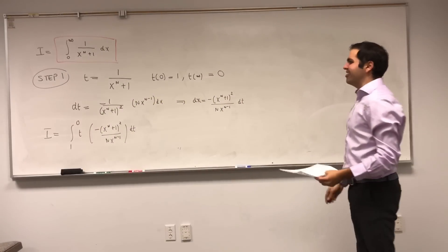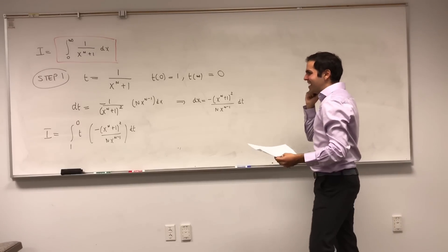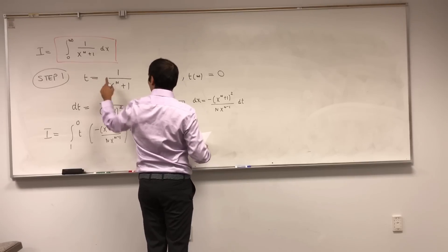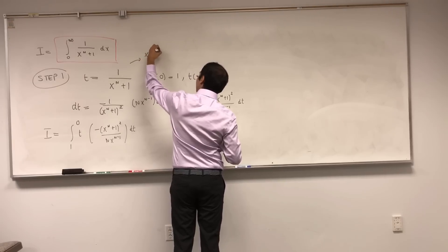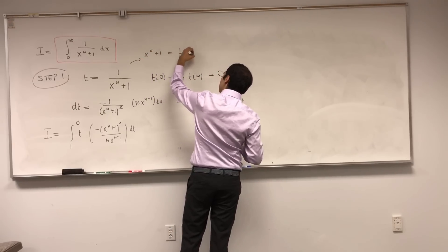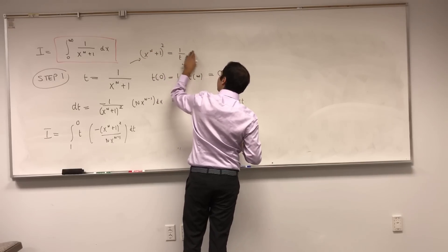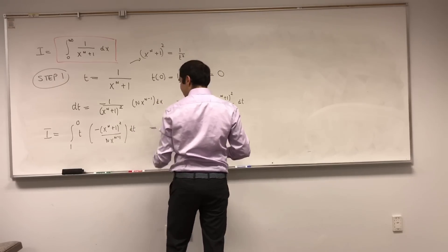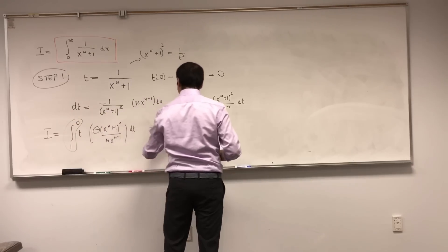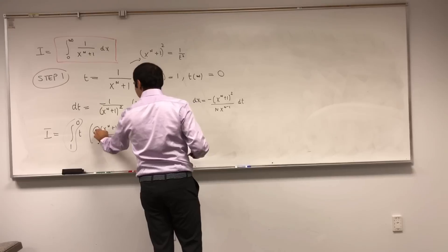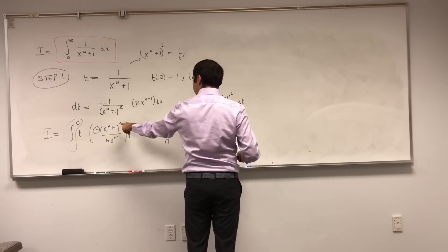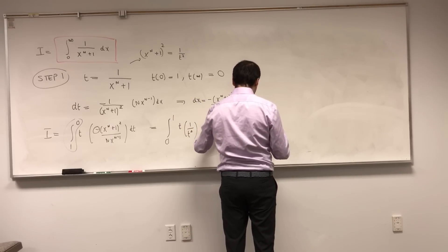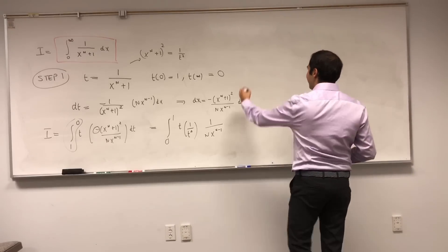Now, of course, for substitution integrals, never mix x and t, and that's why let's write this in terms of t only. So first of all, t is 1 over x to the n plus 1, so x to the n plus 1 is 1 over t. If you square that, you get 1 over t squared, which takes care of this thing. The minus makes the integral switch signs, so integral from 0 to 1 of t times 1 over t squared. But of course, we still have this issue about 1 over x to the n minus 1, but it's okay.